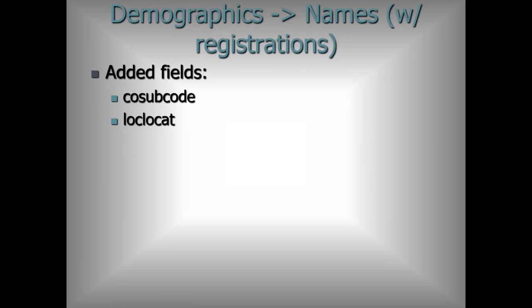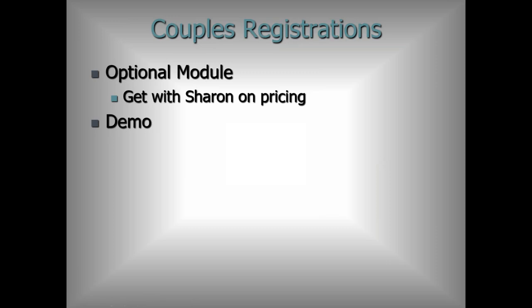Names with registrations from the demographics area: a couple more fields have been added — co-sub code and LOCAT. LOCAT was a bigger deal because before, nothing was coming in from location. This will help at least one institution that was using add functions to bring LOCAT in, which was slowing reports down significantly when running for thousands of names. Now it pops right up.